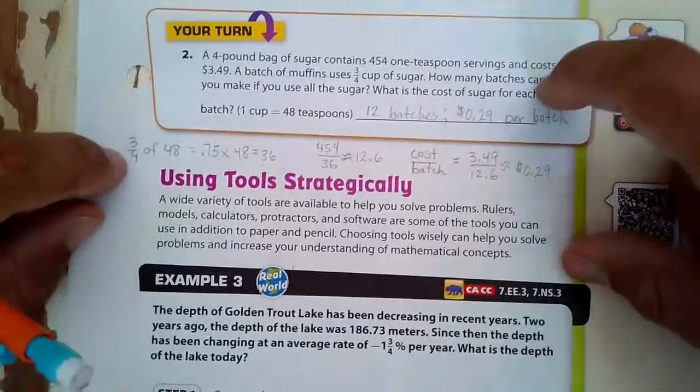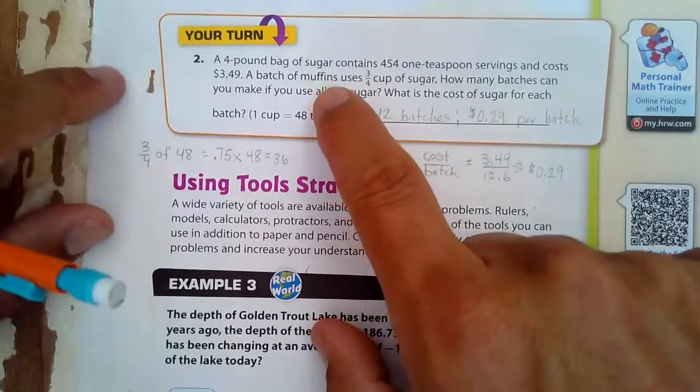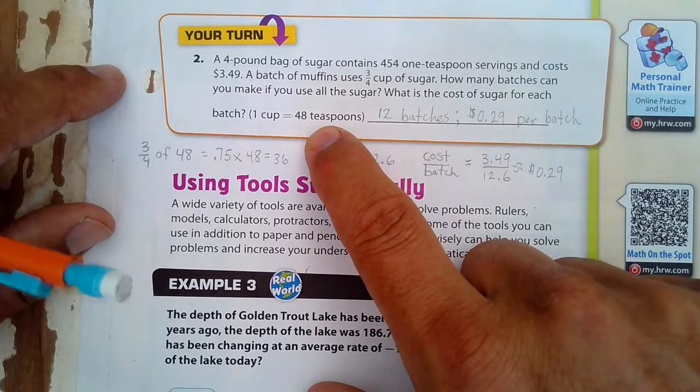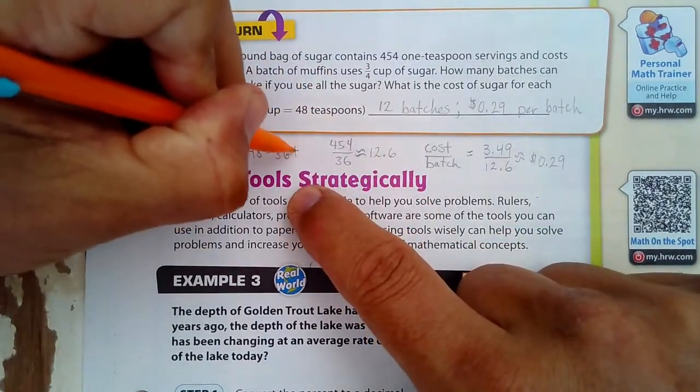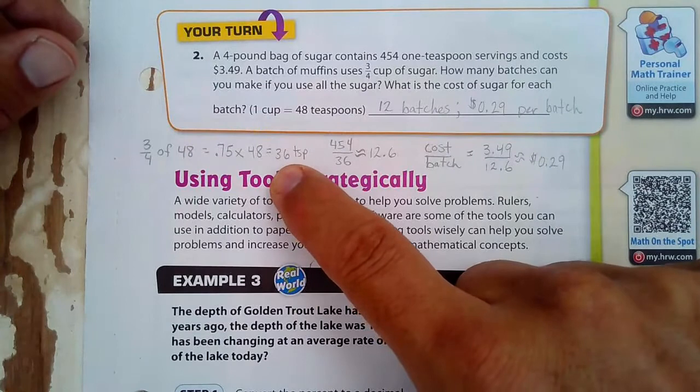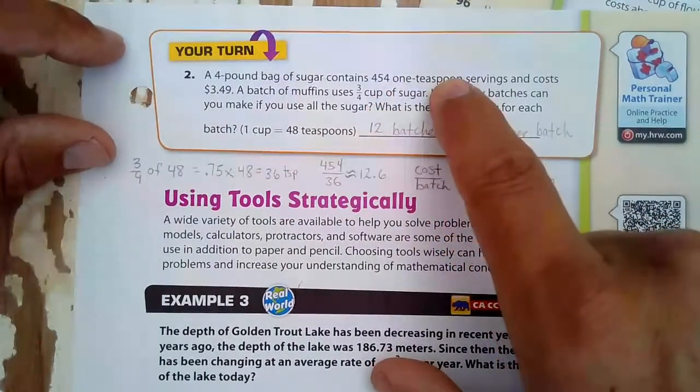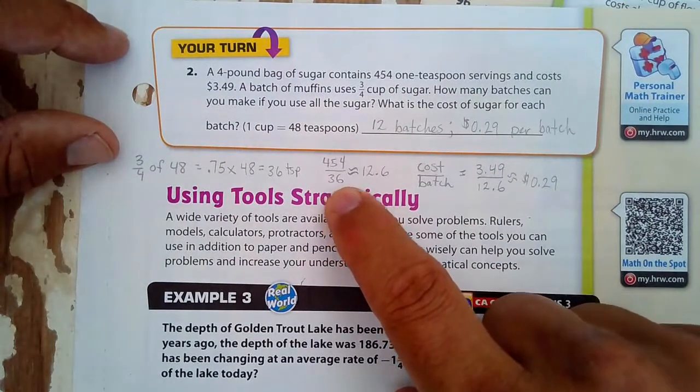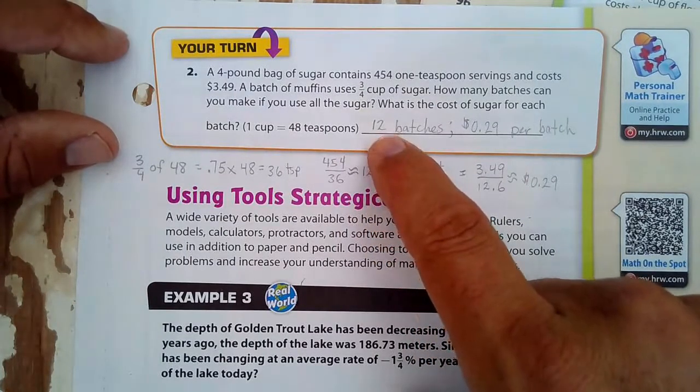What I did first is I decided to figure out, well, what's 3/4 of 48? Why did I do that? Because a batch uses 3/4 cup of sugar and one cup is 48 teaspoons. So 3/4 of 48. So each batch uses 36 teaspoons. TSP is short for teaspoons. Now we have this four pound bag has 454 teaspoons. So 454 divided by how many teaspoons are in one batch. That means I can make 12.6 batches, but I'm not going to make 0.6 batches. I'm going to make 12 batches out of that.